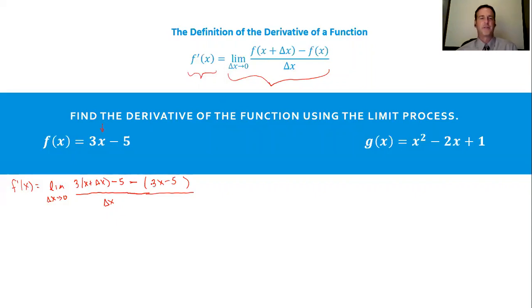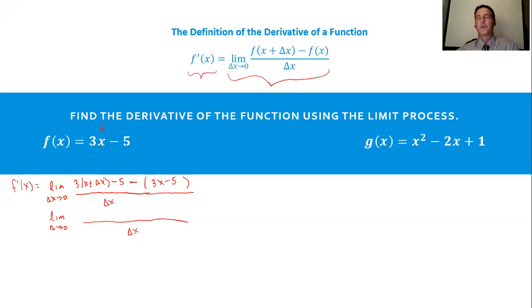It's just the original function minus the original function — the only difference is that your x for your first part is replaced with an x plus delta x. We have to be pretty solid with our algebra for this problem to finish out. I'm going to simplify the top by first multiplying. This subtraction really means plus a negative 1, so it means we subtract 3x plus 5.